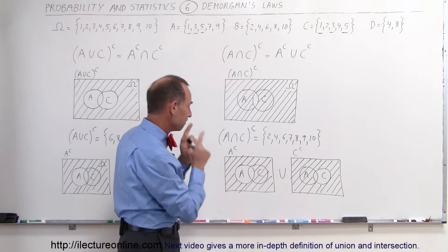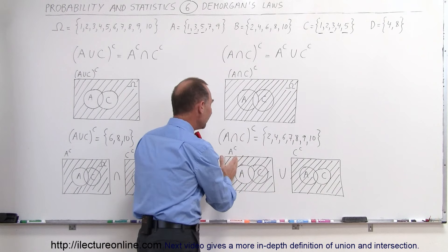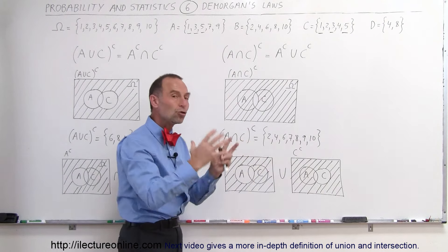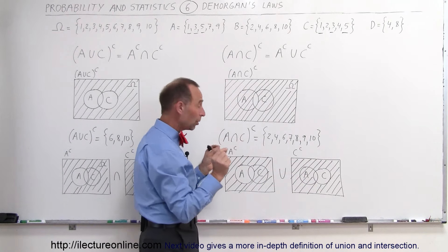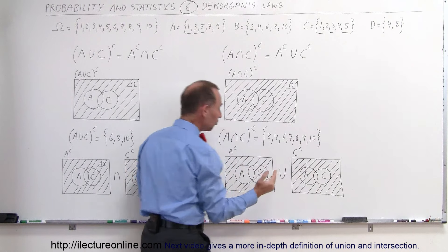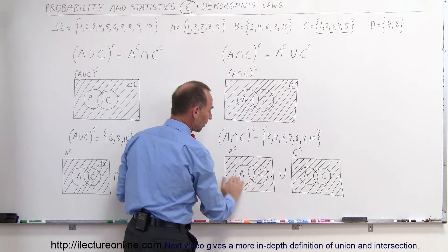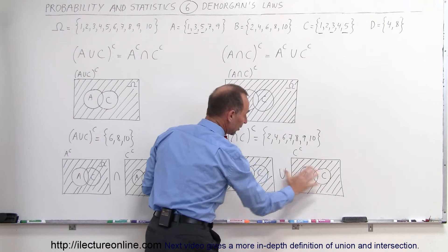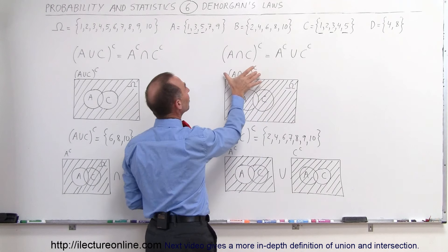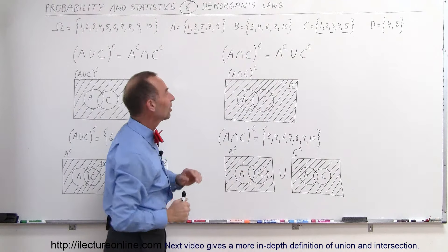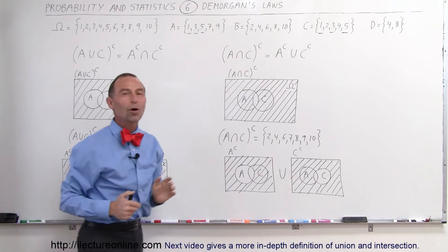The union means whatever belongs to one, the other, or both — you put them all together. Whatever belongs to complement of A is all this area; whatever belongs to complement of C is all this area. The only thing that doesn't belong to either is that small segment in the intersection of A and C. So when we do the union of these two, indeed we get everything else besides that area. You can see that the intersection area doesn't belong to the complement of A, and doesn't belong to the complement of C — everything else does, either the one or the other. So by inspection, we can see that the complement of A intersected with C is equal to the complement of A union complement of C.